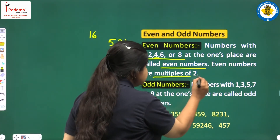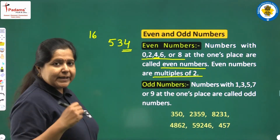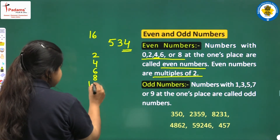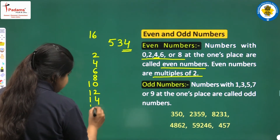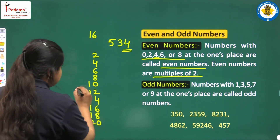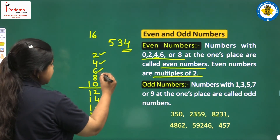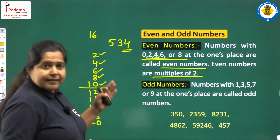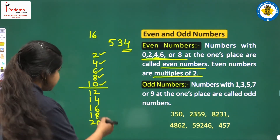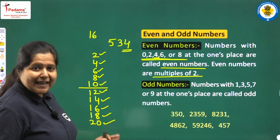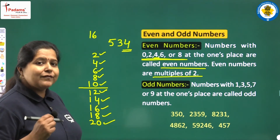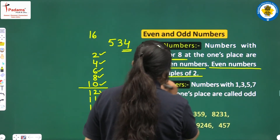Also, even numbers are multiples of 2. Let us write down the multiples of 2 — that is the table of 2 itself: 2, 4, 6, 8, 10, 12, 14, 16, 18, 20. These are the multiples of 2. You will see they have 2, 4, 6, 8, or 0 at the ones place, which is the identification of an even number. So the even numbers are actually the multiples of 2. Even if you move further, again you will get 0, 2, 4, 6, 8 at the ones place in the multiples of 2.